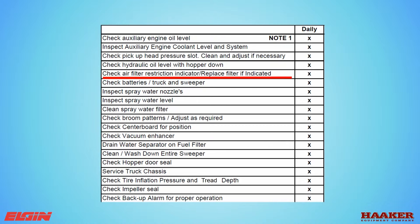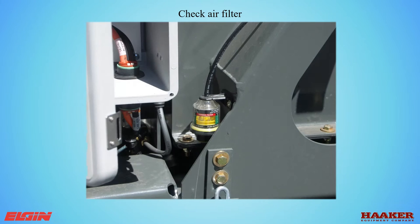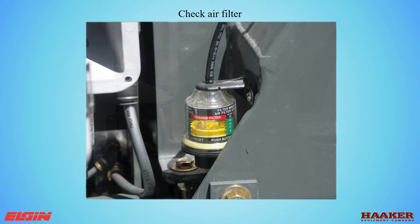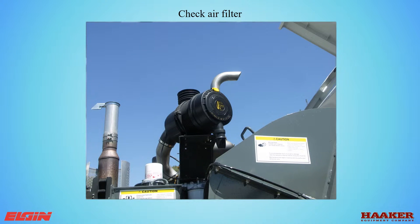Check the air filter restriction indicator, located next to the fan housing. When the yellow plunger inside raises to the red line, clean the filter. Only pull the air filter out of the canister when the restriction indicator reads high. Only clean an air filter by tapping it lightly with your hand — do not beat it on the ground or use air pressure. Beating it will shock and rip the paper; air pressure will blow holes in it. A dirty filter actually filters better than a new one. The inner safety filter should not be removed unless dirty; a color change on the inner filter means the outer filter is bypassing dirt.